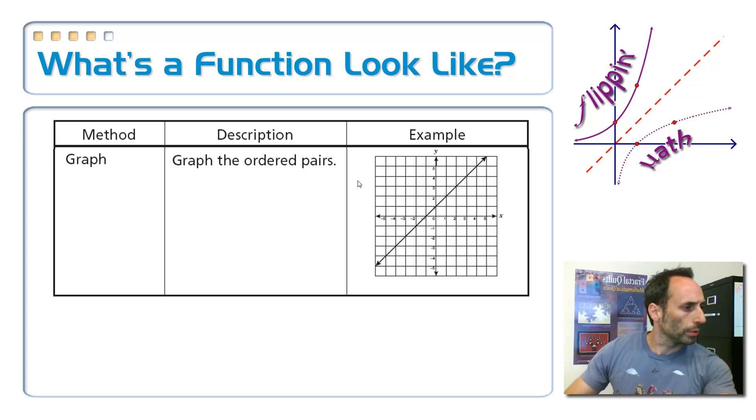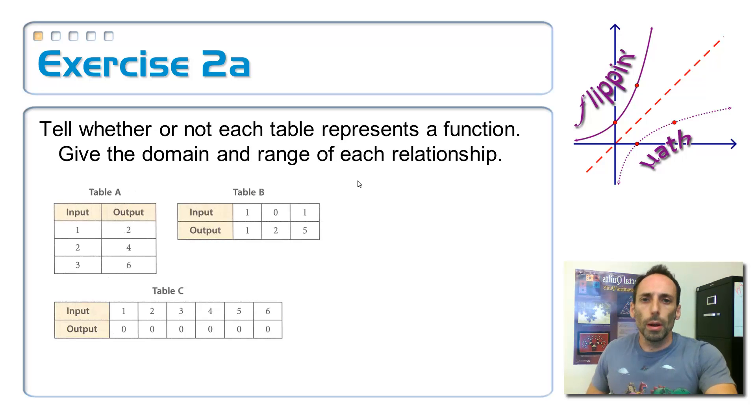Let's look at a couple of exercises. We're just seeing is it a function, and then if it is a function, let's list out, well even if it's not, let's list out the domain and the range. So table A, if you can see these tiny little numbers in this table, let's look just first, is this thing a function? Let's see. One goes with two, two goes with four, three goes with six.